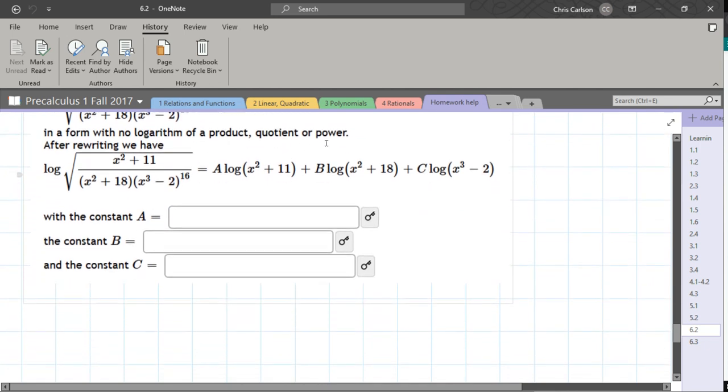So let's first of all rewrite this. So it's log of... Now I'm not going to write the square root as a root. I'm going to write it as a power.